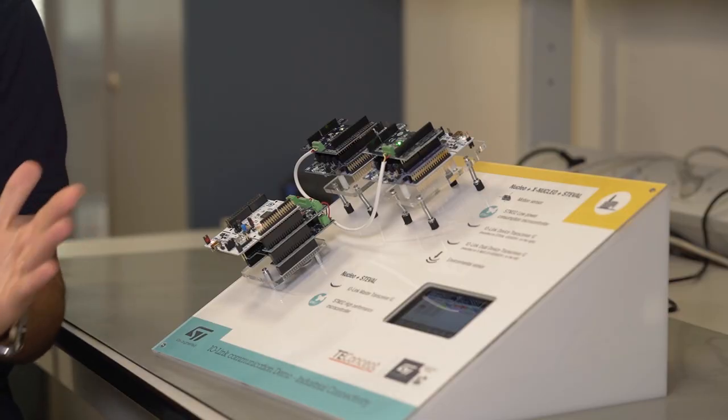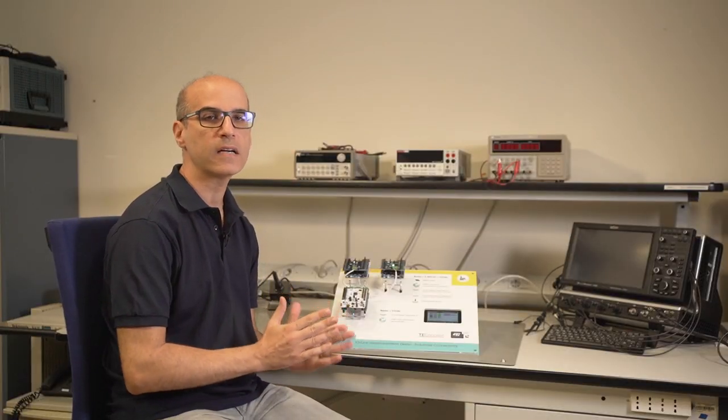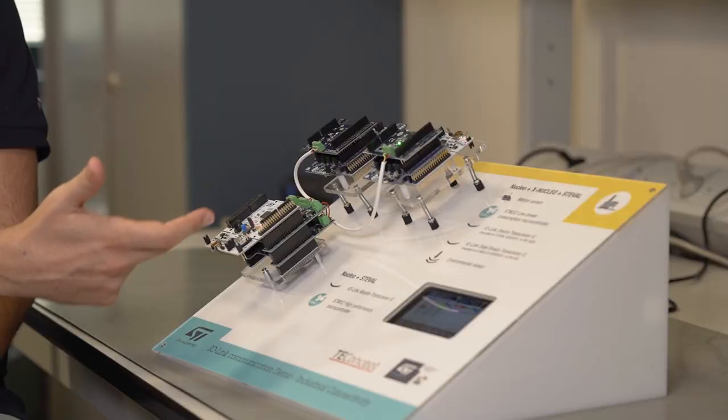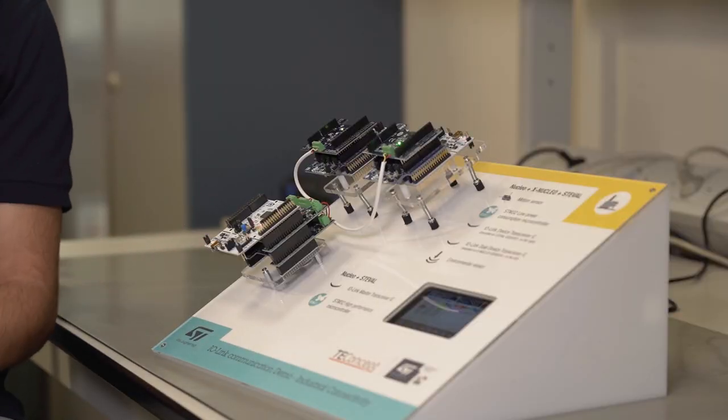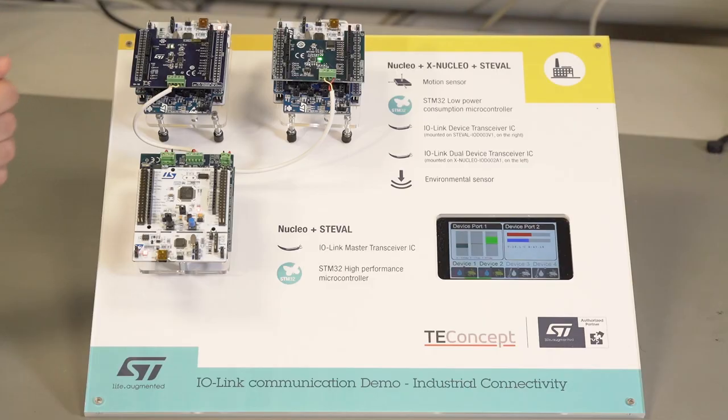This demo represents a basic 3-level industrial installation using ST solutions for IO-Link applications. Here you can see there are two IO-Link sensors, in the middle there are two IO-Link master ports, and there is a F7 discovery board acting as a system controller.